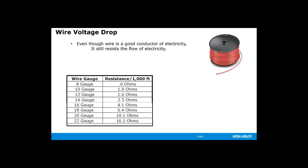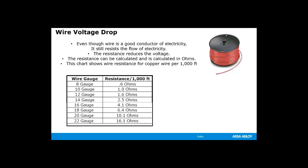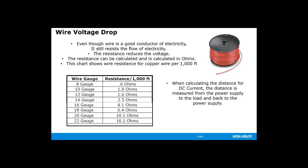Even though wire is a good conductor of electricity, it still resists the flow of electricity. The resistance reduces the voltage and can be calculated in ohms. This chart shows the resistance for 1000 feet of copper cable. When calculating the distance for DC current, the distance must be measured from the power supply to the load and then back to the power supply — it has to be a complete circuit, so you have to double the distance. 24-volt DC will allow longer wire runs with thinner wires, and this is a concern because wire is expensive.